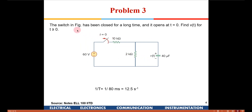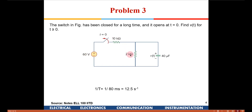The third problem: the switch in the figure has been closed for a long time and is opened at t equals 0. If the switch is closed for a long time, for DC steady-state analysis we can assume the capacitor is an open circuit — no current flows into the capacitor; current flows only through the 10 k and 2 k ohm resistors. The voltage across the capacitor equals the voltage across the 2 k ohm resistor, found using the voltage divider rule: 60 × 2 divided by (10 + 2) equals 10 volts.